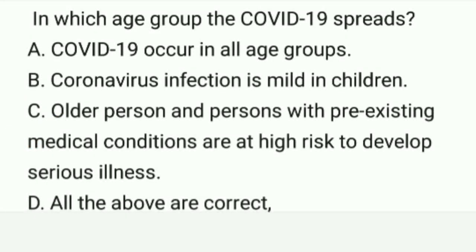In which age group does COVID-19 spread? A. COVID-19 occurs in all age groups. B. Coronavirus infection is mild in children. C. Older persons and persons with pre-existing medical conditions are at high risk to develop serious illness. D. All the above are correct. Correct option is D. All the above are correct.